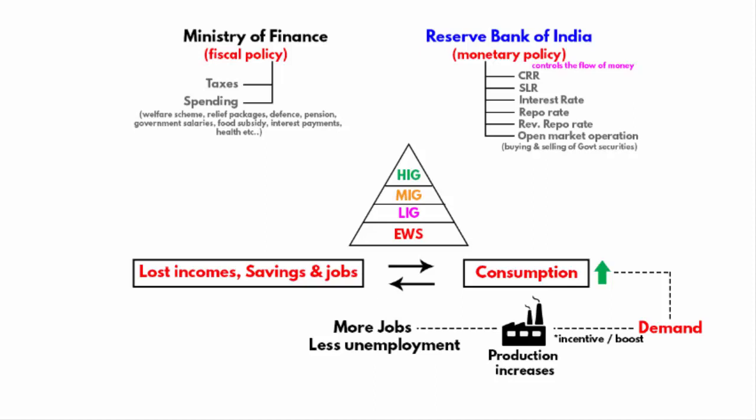In fact, the government uses this classification for various housing schemes. Although the government is there for everyone, when it comes to welfare schemes, the government's first priority is always the low income group and economically weaker sections. In the moment of crisis, like during this lockdown, the middle income group and high income group are somehow surviving on their savings and partial or full salary. It is the low income group and economically weaker section who are affected majorly.